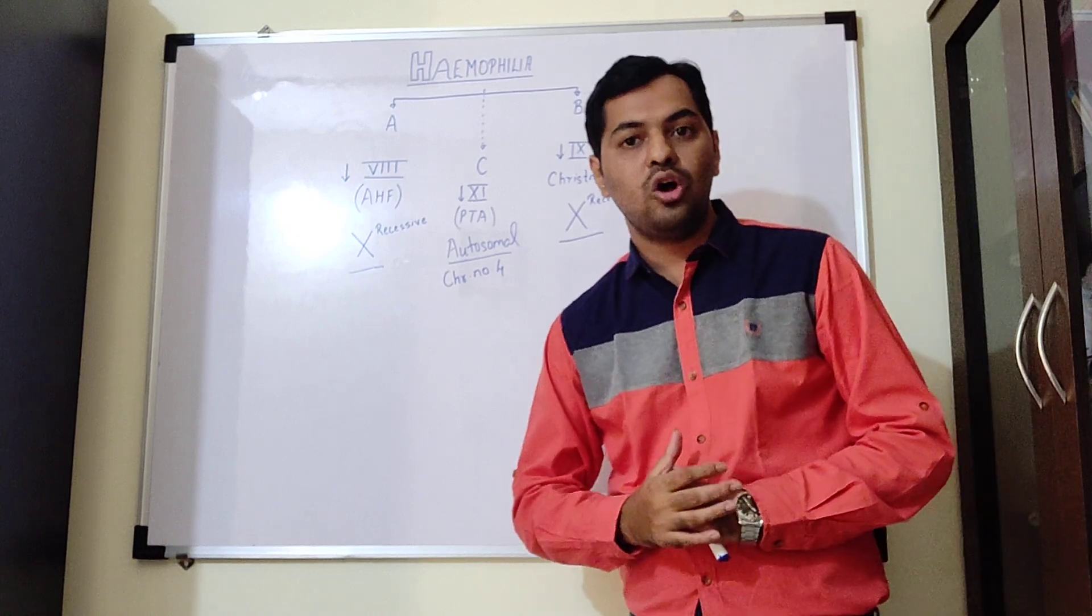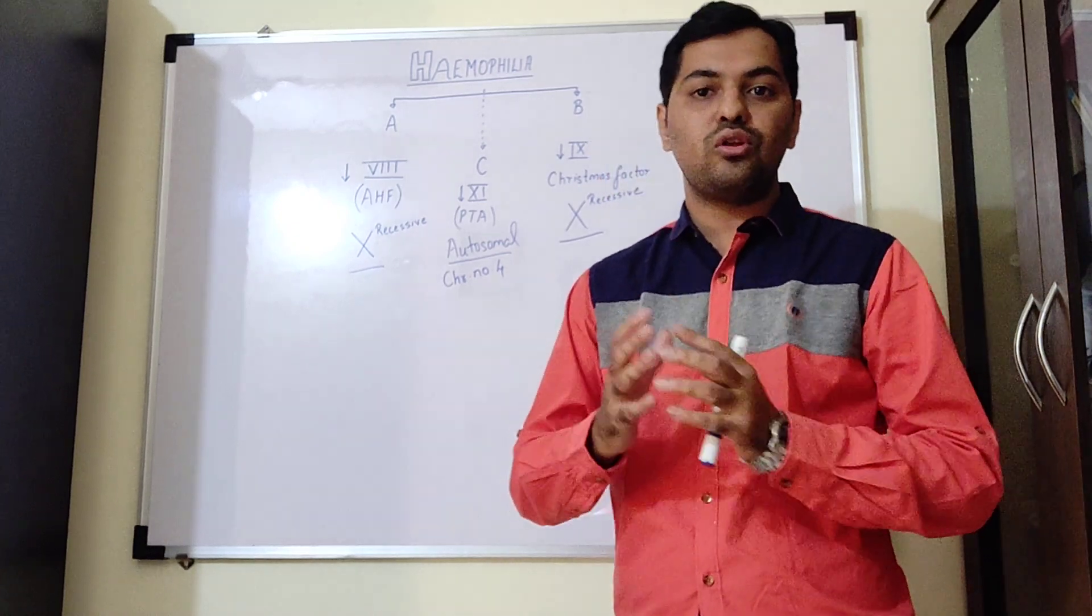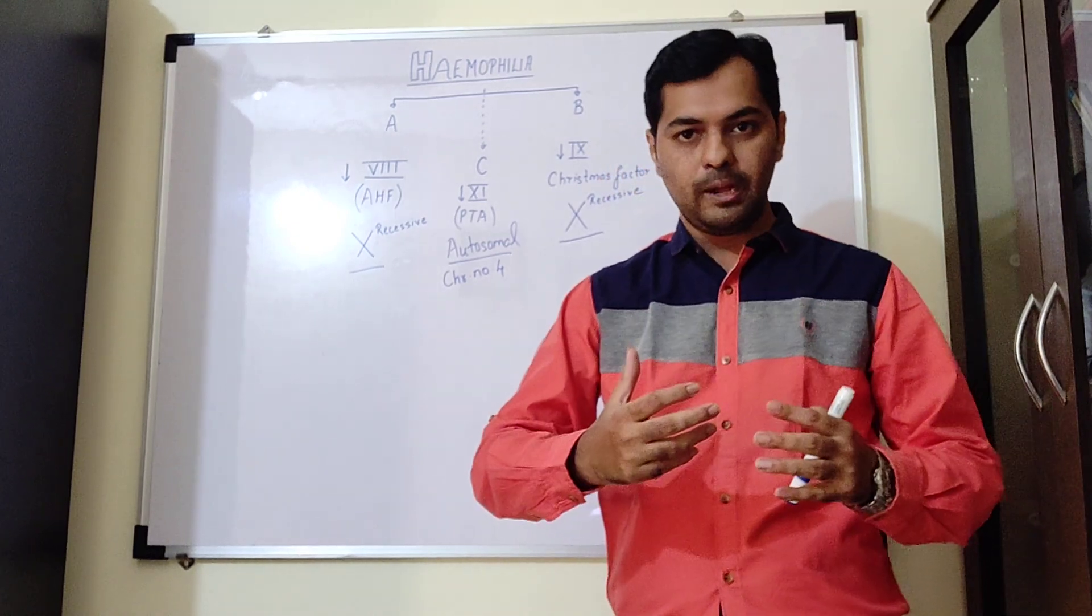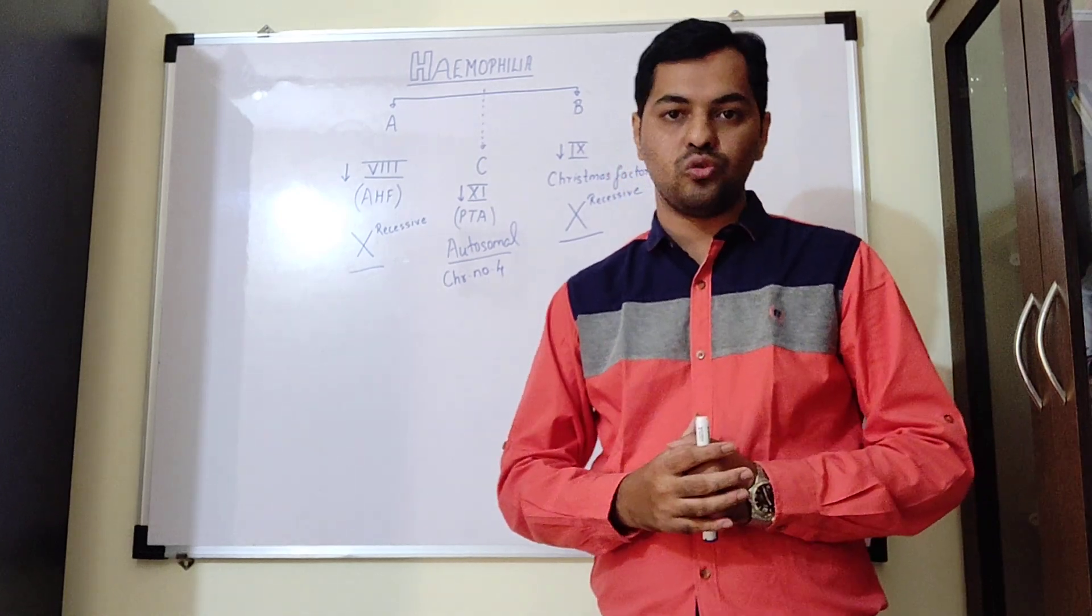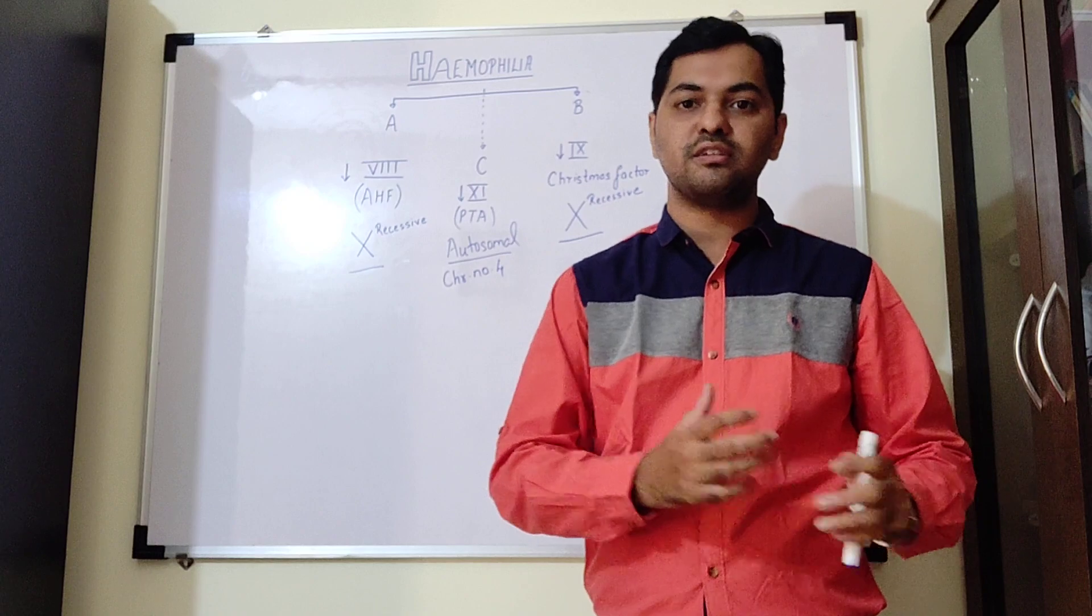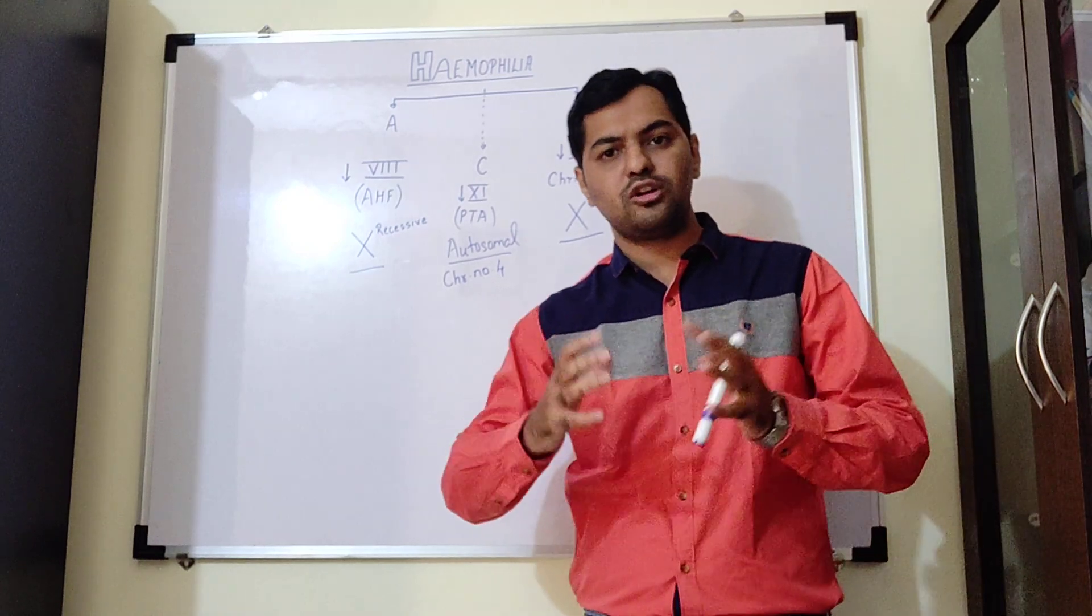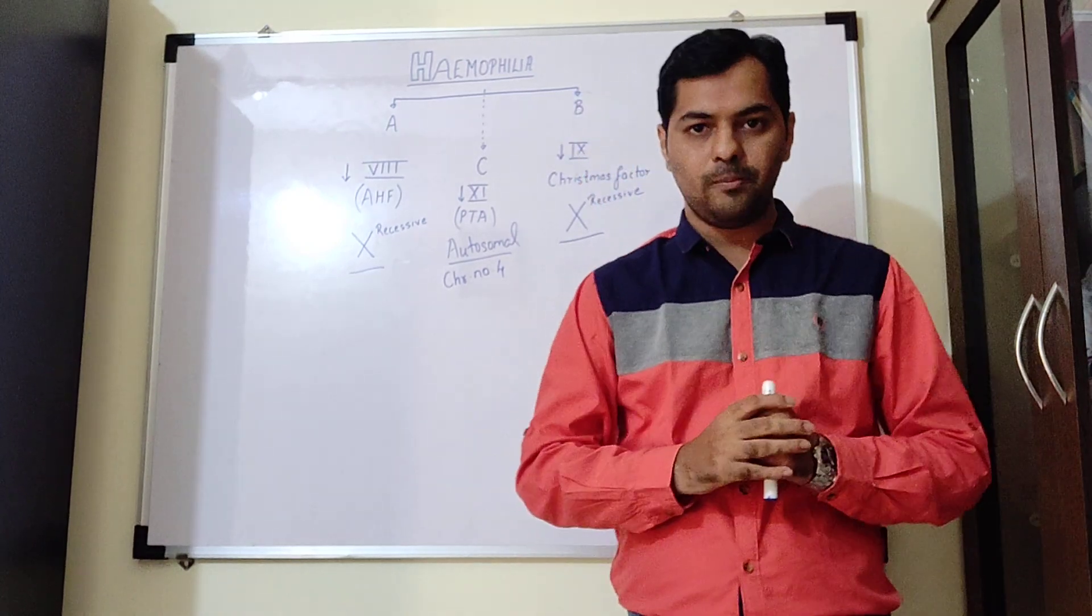Hemophilia was also discovered in the royal family of Queen Victoria. Since it is X-linked, it definitely shows criss-cross inheritance pattern. Let me extend the topic to another part as well.